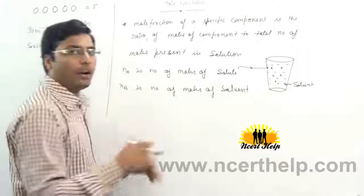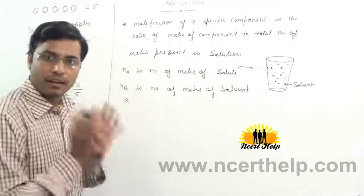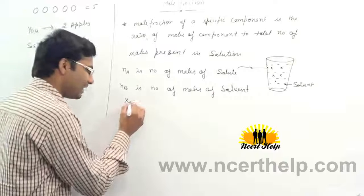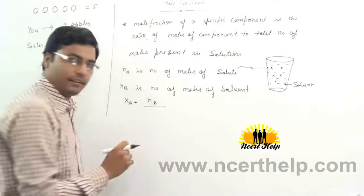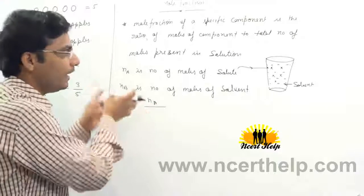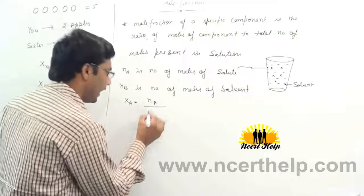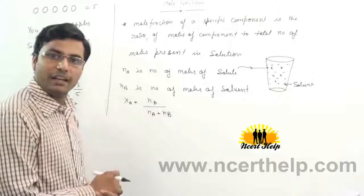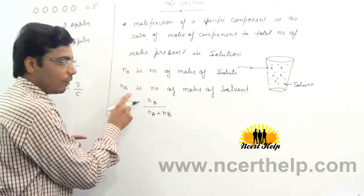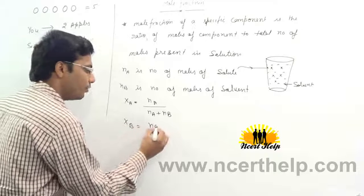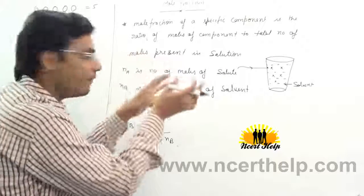Now we want to calculate mole fraction of the solute. Mole fraction is represented by capital letter X. So Xa, the mole fraction of component A, is equal to the number of moles of A divided by total number of moles, which is Na plus Nb. Similarly, if we want to calculate the mole fraction of solvent B, then Xb equals number of moles of B divided by total number of moles.